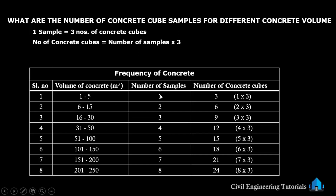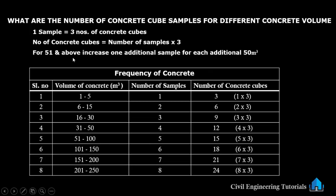After 31 to 50 cubic meters, for each additional 50 cubic meters, we have to increase one sample. So for 51 and above, increase one additional sample for each additional 50 cubic meters. For example, 51 to 100 cubic meters is five samples, 101 to 150 is six samples, 151 to 200 is seven samples, and 201 to 250 is eight samples.